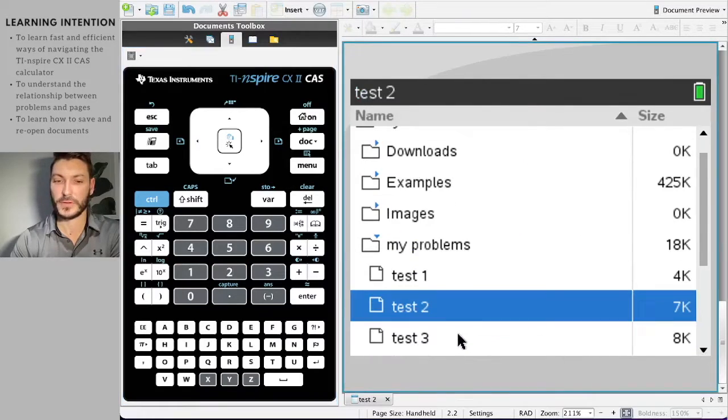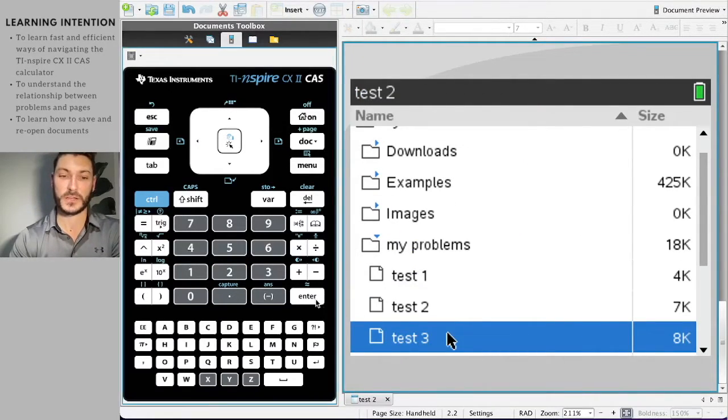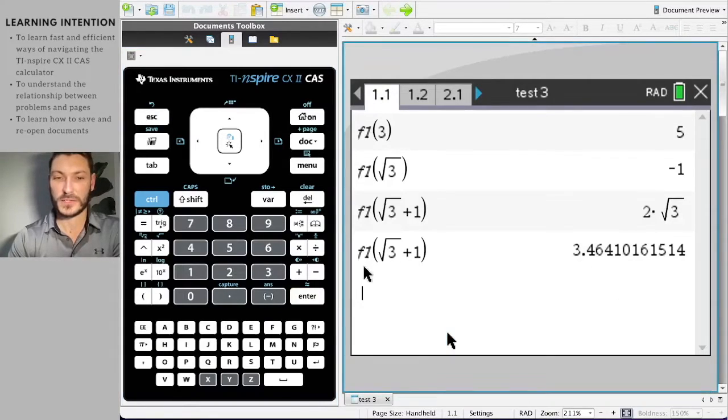I want to go back to my other document. Now document file open. Let's open test number three, which is the one we just worked on this entire video. And this should be familiar to us. F one of root three plus one is 3.46.